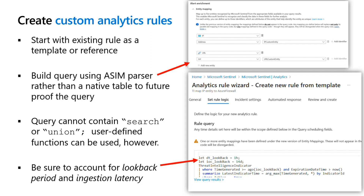You have to factor in or account for latency that might occur between the time an event is generated at its source and the time it gets ingested into Sentinel and the rule gets fired. Sentinel runs scheduled analytics rules on a five-minute delay from their scheduled time. Make sure you're factoring in the ingestion delay into the way you construct your query and the lookback period.